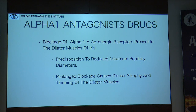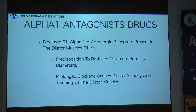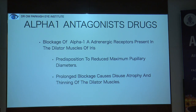Whenever a patient being treated for BPH uses Tamsulosin or any other alpha adrenergic receptor blocking agent — specifically alpha-1A adrenergic receptors — it blocks the dilator muscle of the iris. Prolonged blockage causes disuse atrophy and thinning of the dilator muscles, resulting in reduced maximum pupillary size.